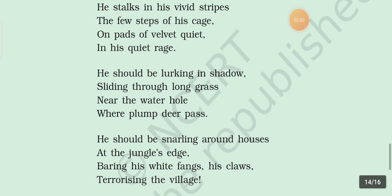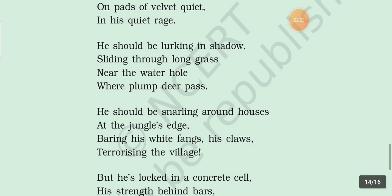In the third stanza: 'He should be snarling around houses at the jungle's edge, baring his white fangs, his claws, terrorizing the village.' Again, 'he' is used for the tiger, so the whole stanza is written in personification. In the first line, 'should' and 'snarling' — the S sound is repeated, so alliteration figure of speech is used here. And 'snarling' means the sound of a tiger, so onomatopoeia figure of speech is used here.